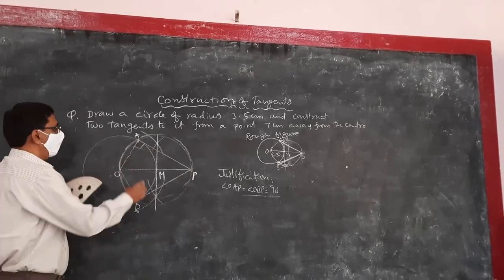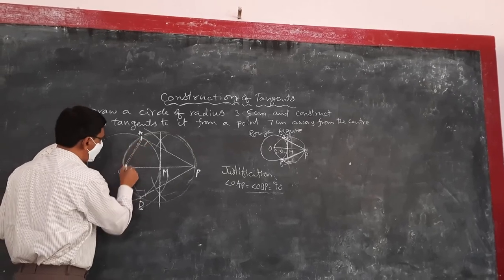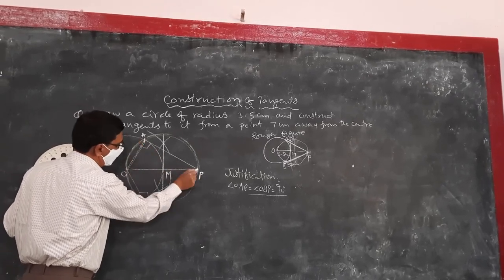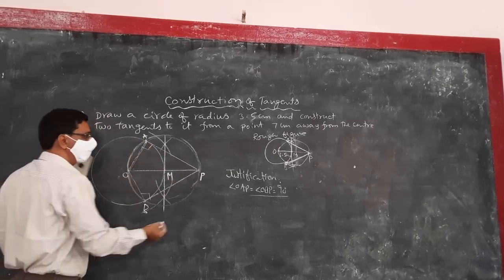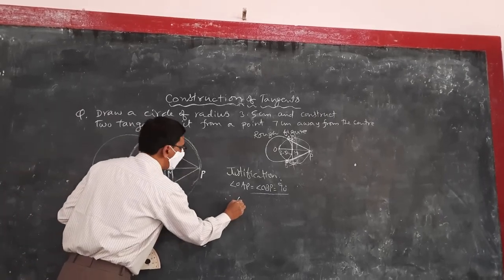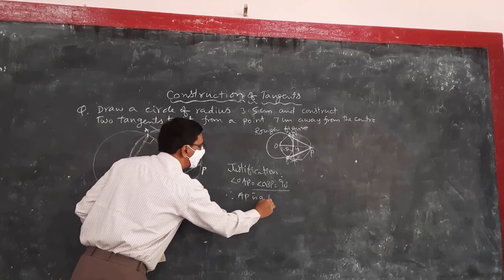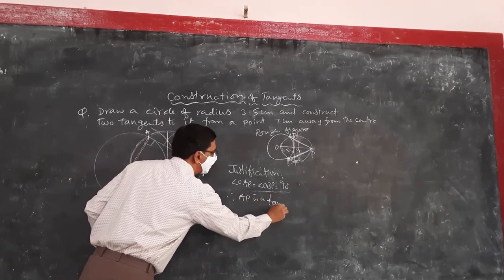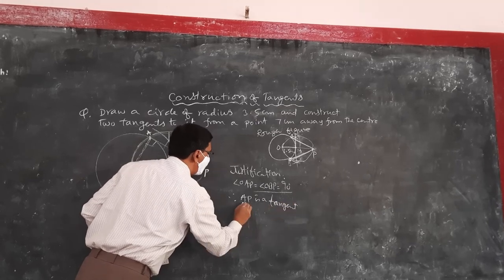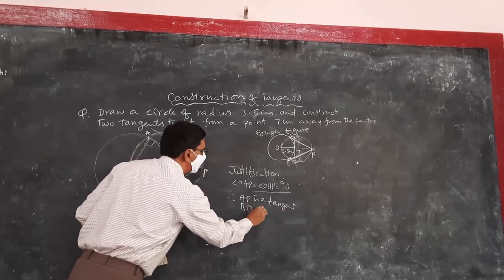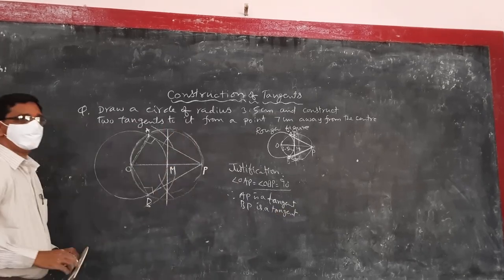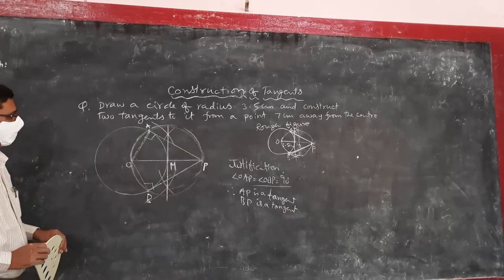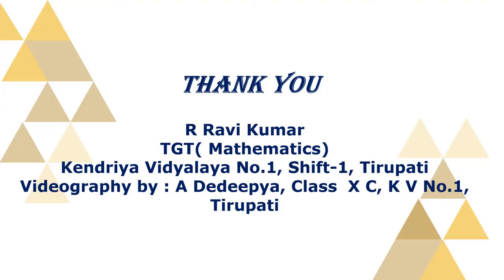And then radius is perpendicular to a line drawn like this. Therefore AP is a tangent and BP is also a tangent. Angle in the semicircle, this is the justification. They can do that, finish the problem like this.